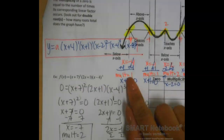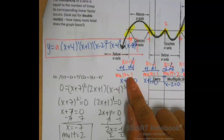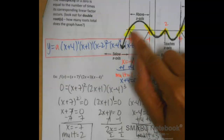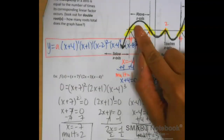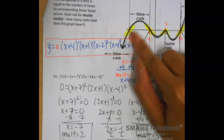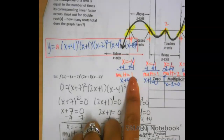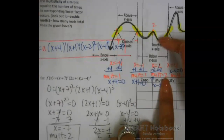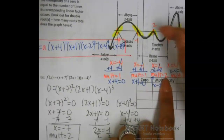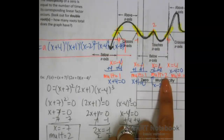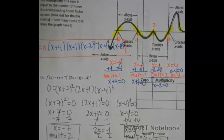Just to refresh your memory, we found these multiplicities last class by looking at the graph. At an intercept that's crossing through, what type of function does that look like? Linear — so we put multiplicity of 1 because the exponent on a linear function is 1. What about the 2? We got that because it looks like a quadratic — it bounces off and has that parabola shape. That's how we got those multiplicities.